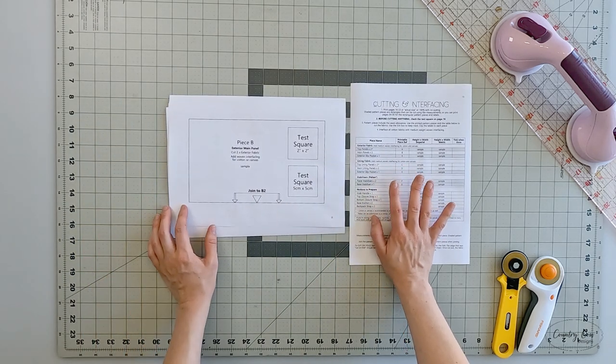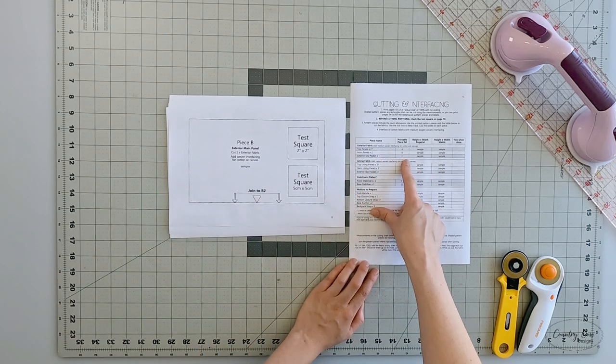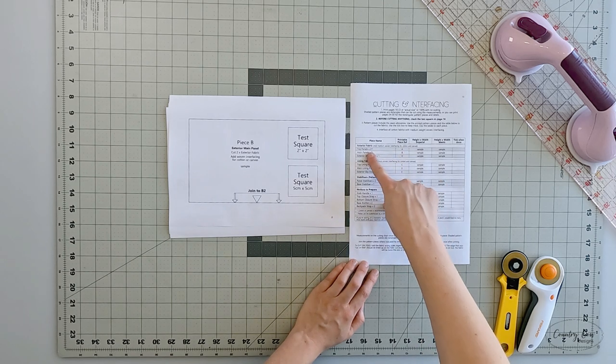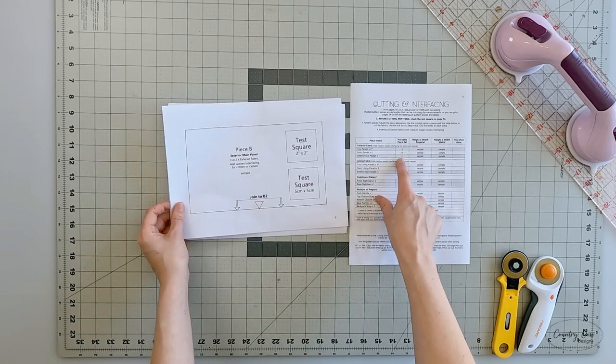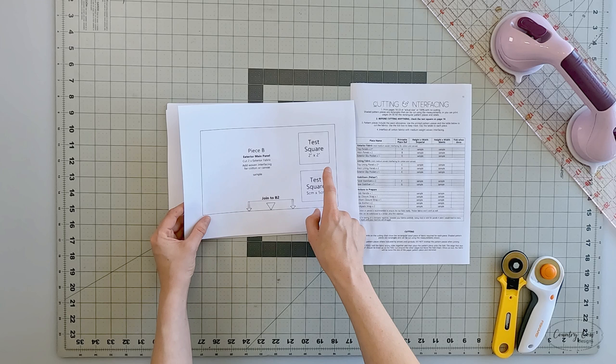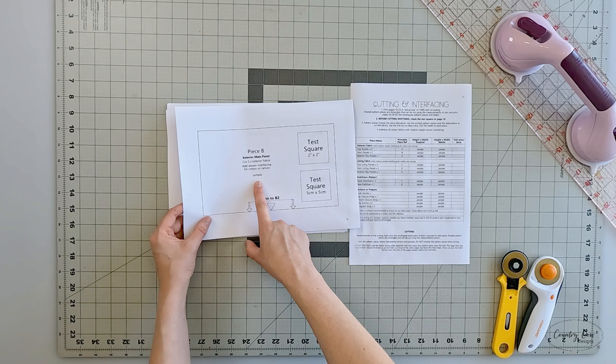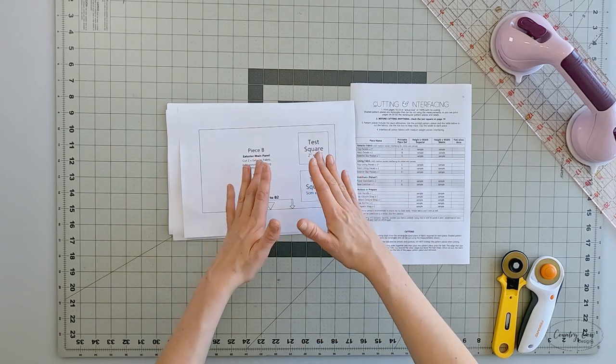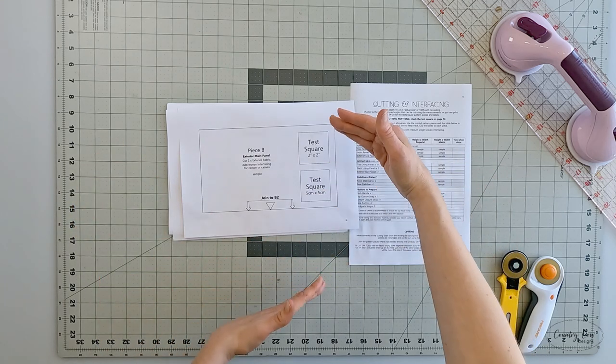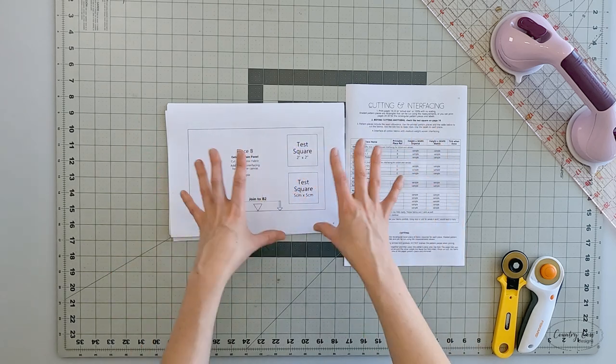All of our patterns have this cutting chart. It will tell you if you need to add woven interfacing for certain fabrics. It will tell you which pattern piece is which. On the actual pattern, rather than saying sample, it will have the measurements for you. If it's not a rectangle piece, the measurements will be the widest point and the highest point, so that if you're block fusing your interfacing, you know how much fabric you need.